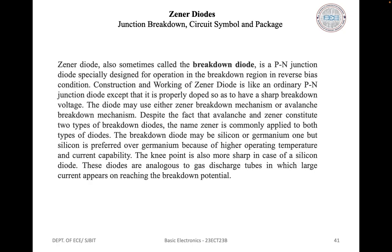There are two mechanisms that cause breakdown in a reverse-biased p-n junction. With a very narrow depletion region, the electric field strength produced by a reverse bias voltage can be very high. This high-intensity electric field causes electrons to break away from their atoms, thus converting the depletion region from an insulating material into a conductor. This is ionization by electric field, also called zener breakdown, and it usually occurs with reverse bias voltage less than 5 volts.